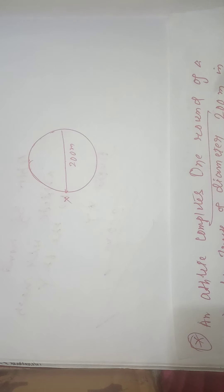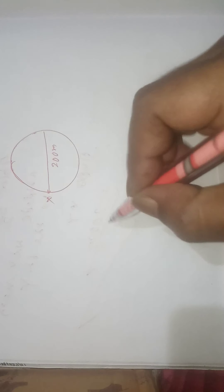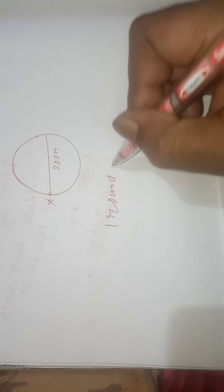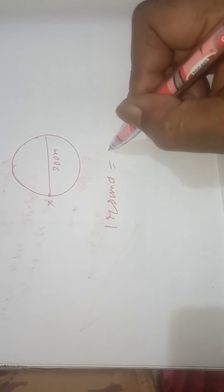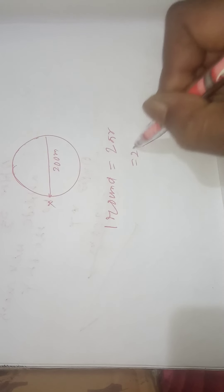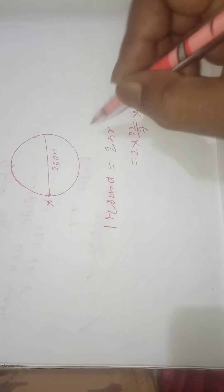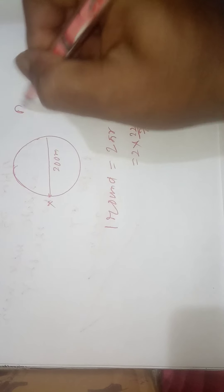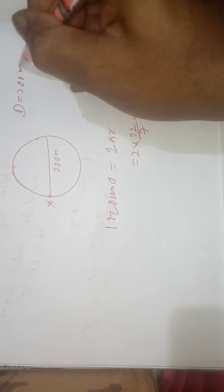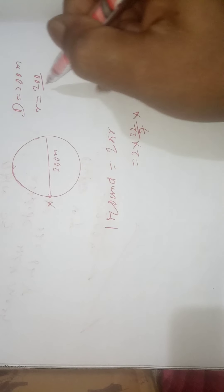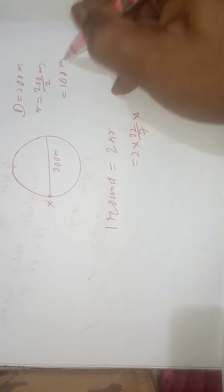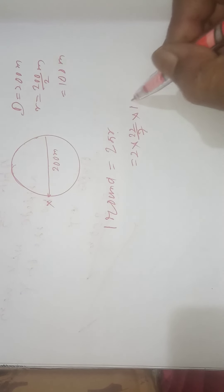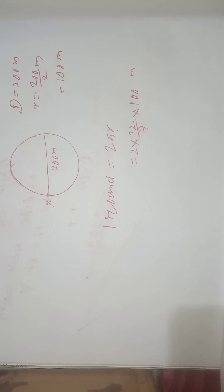Let's first find out how much distance is covered in one round. One round means one circumference. The circumference formula is 2πr, where π is 22/7. The radius is always half of the diameter, so diameter is 200 meters, which means radius is 100 meters. So this is the one round distance, and this distance can be completed in 40 seconds.